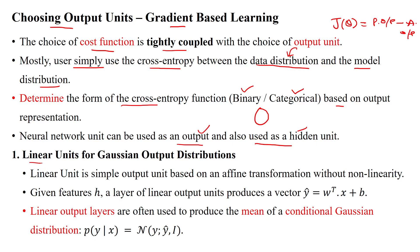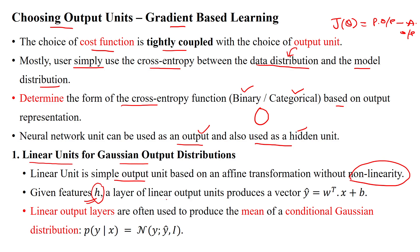The first is the linear activation function, used for Gaussian output distributions. The linear unit is a simple output unit based on an affine transformation with no non-linearity. A layer of linear output units produces a vector of values based on the equation y_cap = w^T x + b, where w is the weight parameters, x is the input features, and b is the bias value.